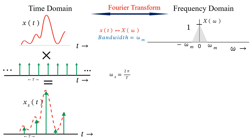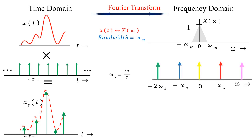Representation of all these signals in the frequency domain gives a better visualization and understanding of the sampling theorem. The Fourier transform of an impulse train is also an impulse train, which is periodic with periodicity omega_s = 2π/T. So if T decreases, omega_s increases — meaning as the distance between impulses decreases in the time domain, the distance between impulses increases in the frequency domain.